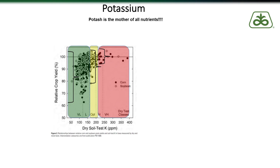So what that tells us is if we want to reduce year-to-year yield variability, one of the things that we need to do is build our soil test potassium levels up. This is why Pioneer recommends for your soil test potassium to generally be in that 200 to 250 plus parts per million range. You can just see we eliminate a lot of yield variability that's out there.